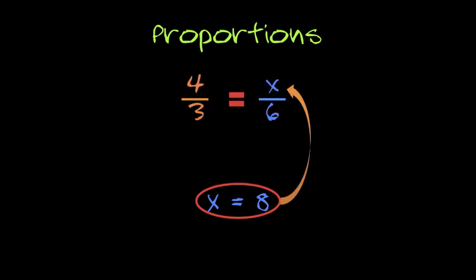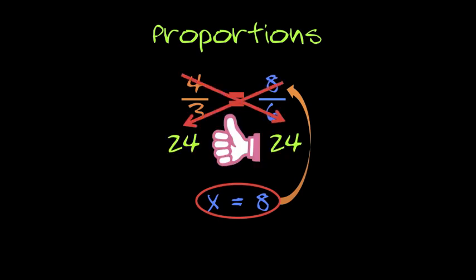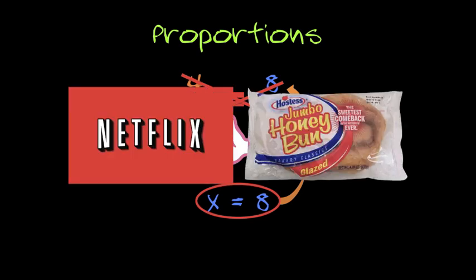When you find your solution, go back up and plug it in. And check it by cross-multiplying again. If you get the same answer, then you know that you're done. So you can watch Netflix and eat a honey bun.